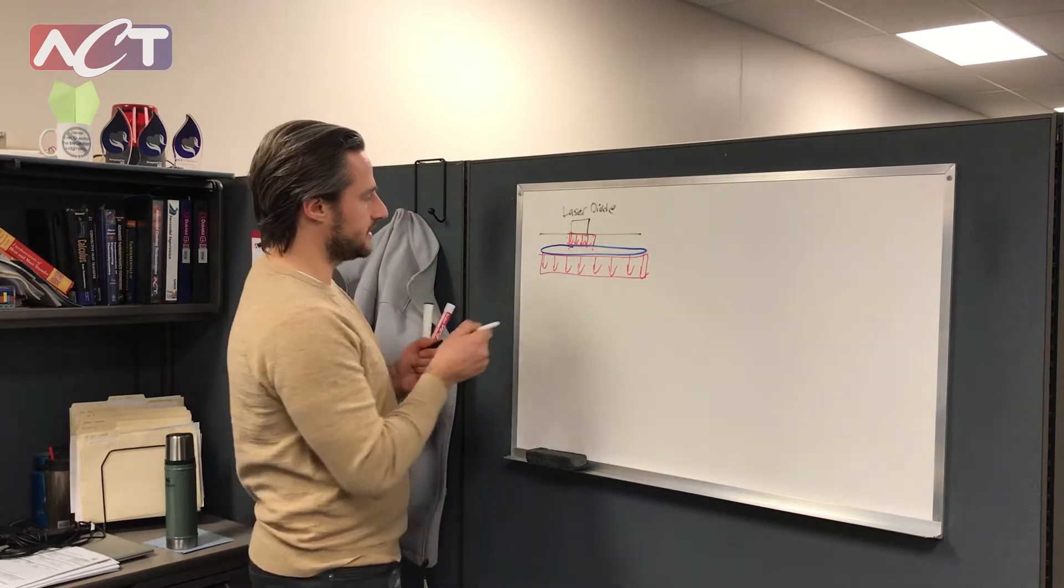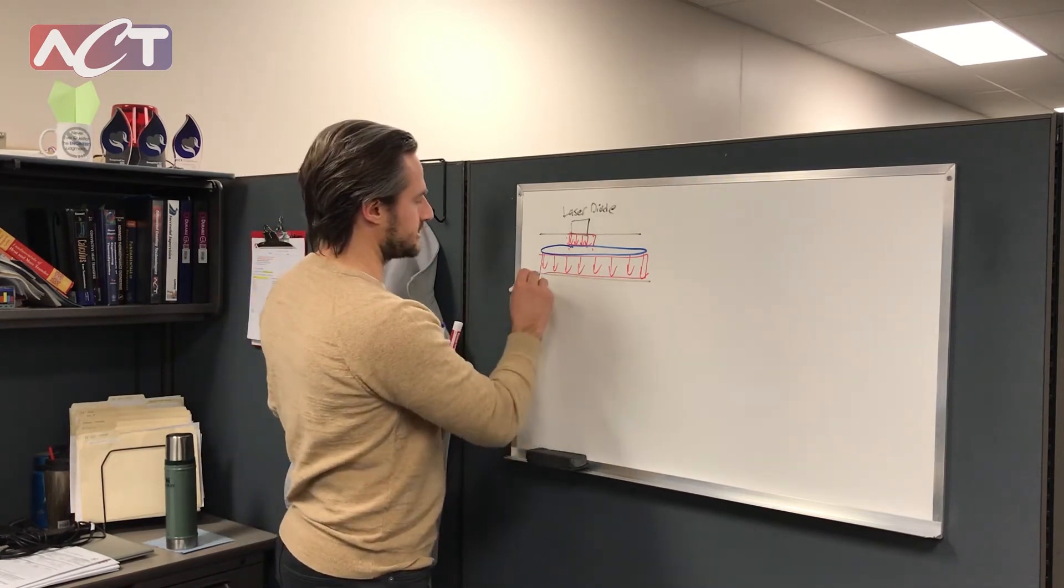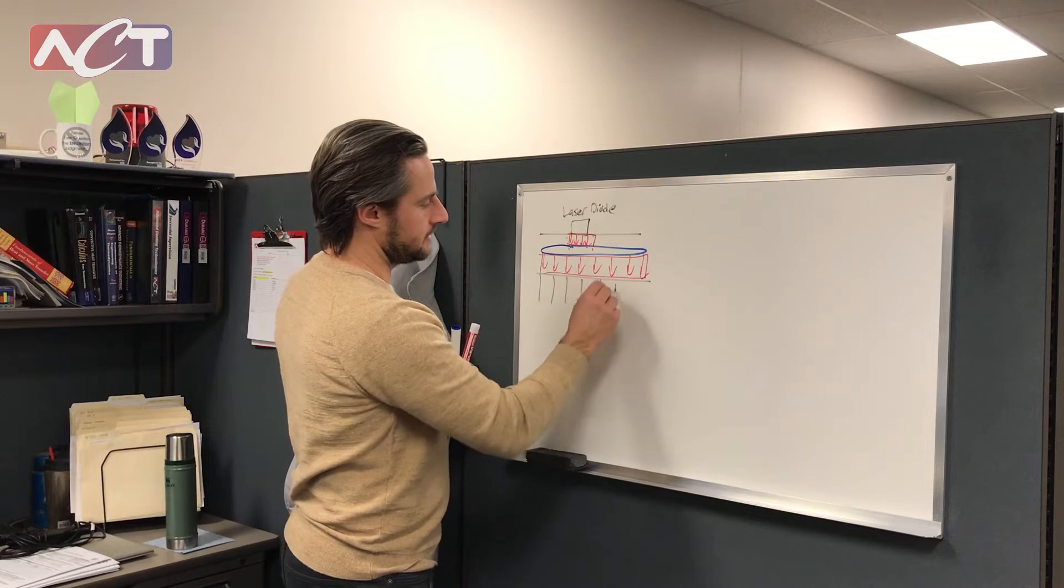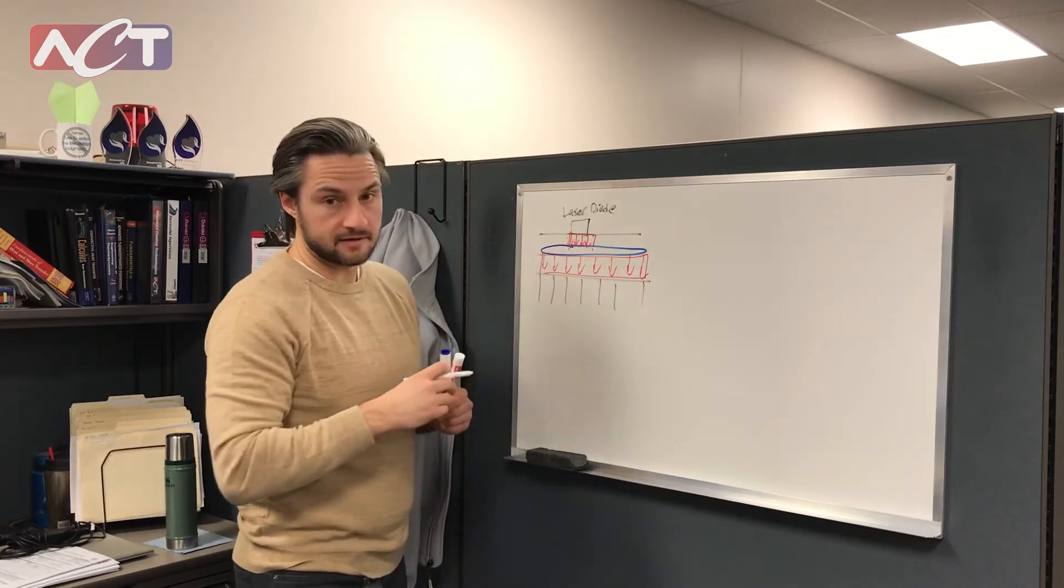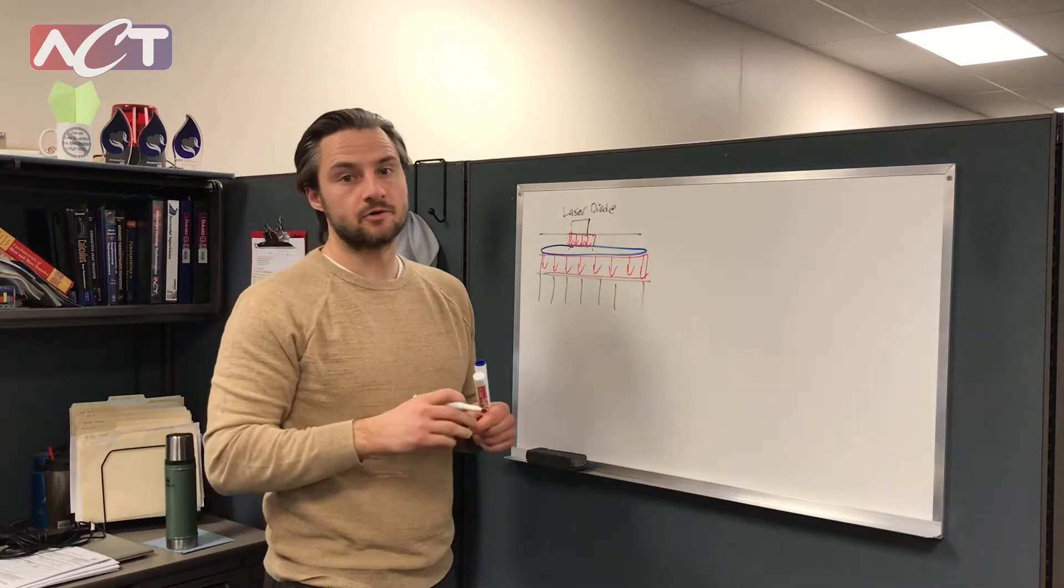That allows us to add something like a heat sink on the back side of the heat pipe and be able to cool a very high heat flux source using air cooling which wouldn't normally be possible.